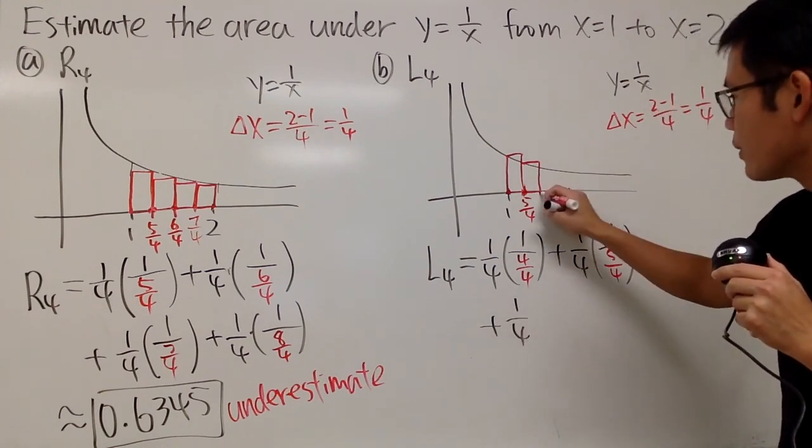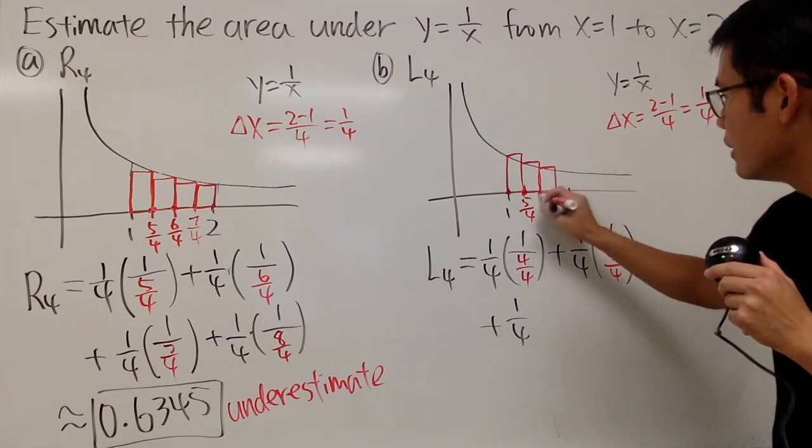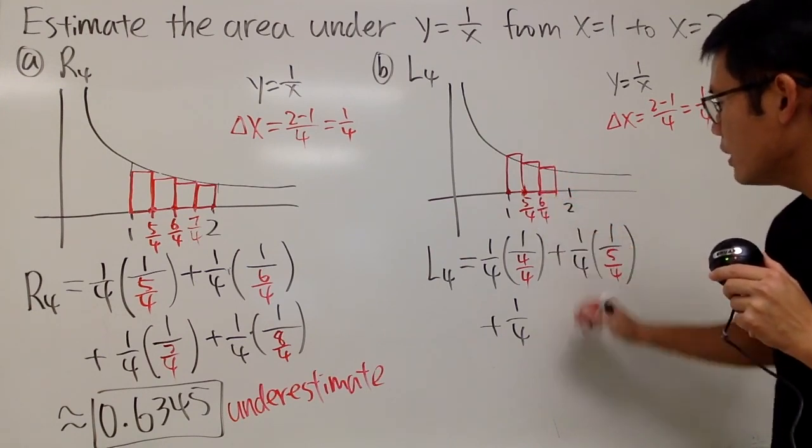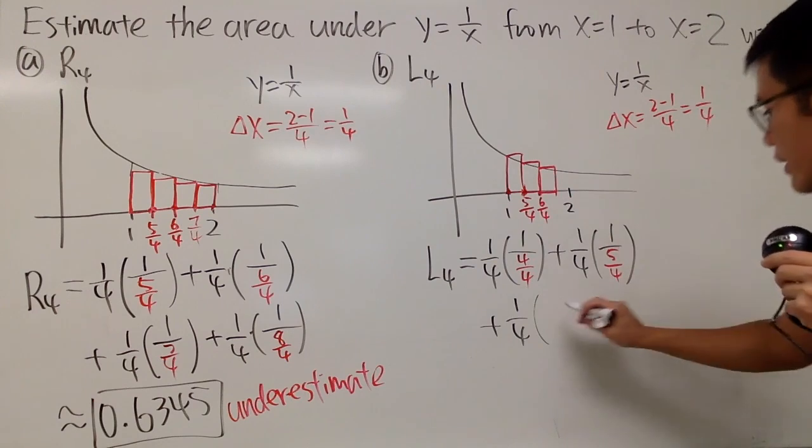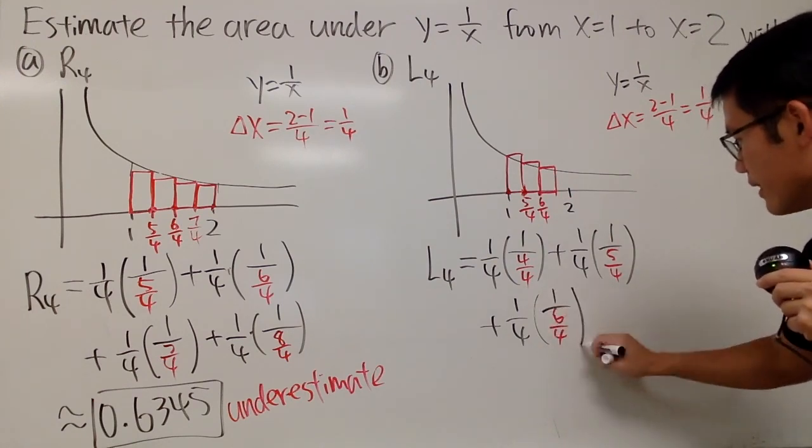plus 1 over 4, and then we are going to use this. Go up, hit the curve, and then make a rectangle. This x value is 6 over 4, so we just plug in 6 over 4 in there: 1 over 6 over 4 like this, and then last one.